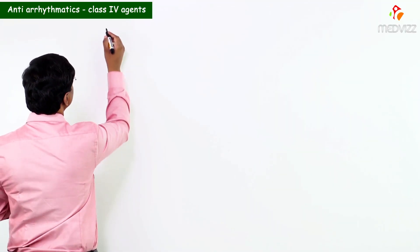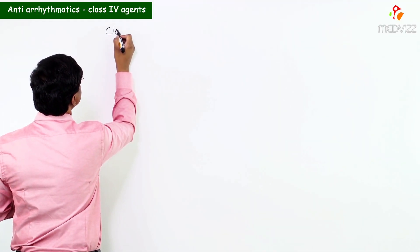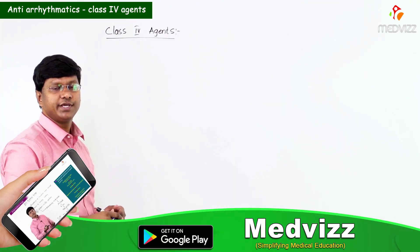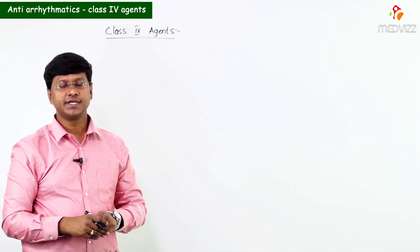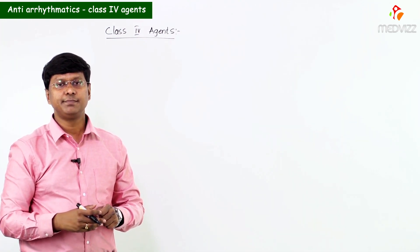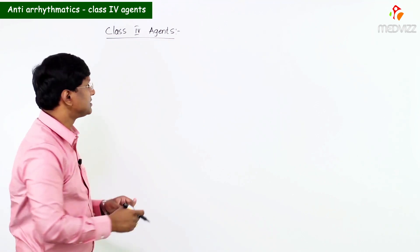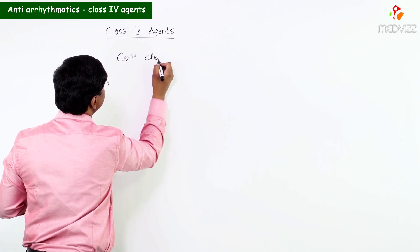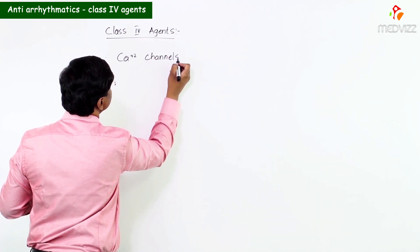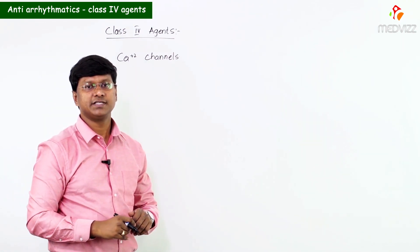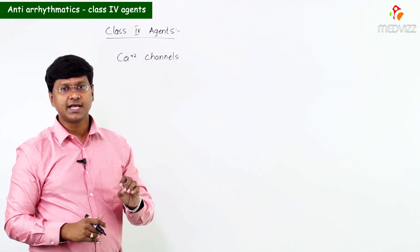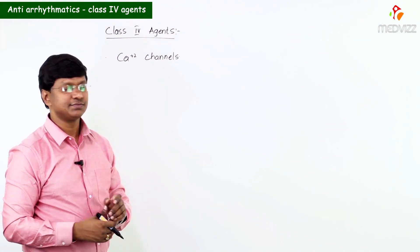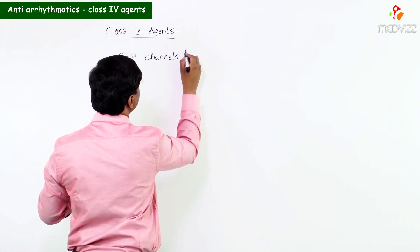Let me discuss about the Class 4 agents. These are the blockers of calcium channels. The key point here is which type of calcium channels are being blocked — Class 4 agents are the blockers of L-type voltage-gated calcium channels.